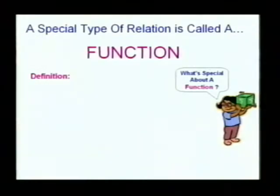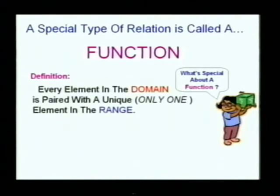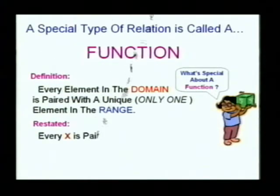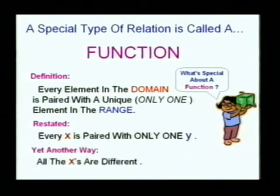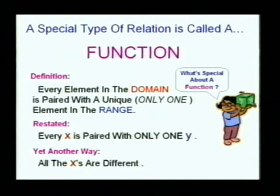Now for something completely different. There was a special type of relation — a very useful one — called a function. What made a relation special enough to be a function? For every element in the domain, there was a unique element in the range — in other words, only one in the range. A lot of people didn't like that definition, so here's another one: every x is paired with only one y. Or even simpler: all the x's are different. As long as all the x's are different, you've got yourself a function.